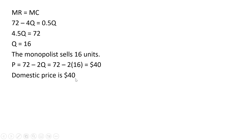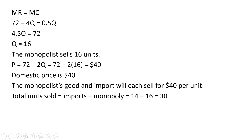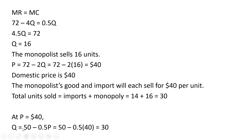The domestic price is $40. So the monopolist's good and the import will each sell for $40 per unit. The total units sold in the domestic economy are the number of imports restricted by the quota to 14, plus the monopolist output of 16, giving a total output of 30. At a price of $40, plugging back into our original market demand, we see that 30 units will be purchased by domestic consumers — 14 being imports, 16 being from the monopolist.